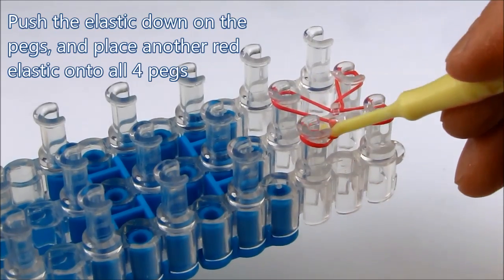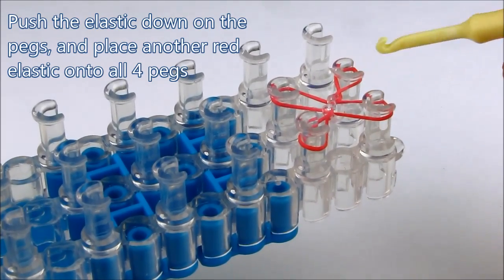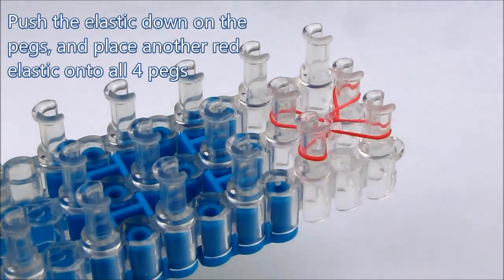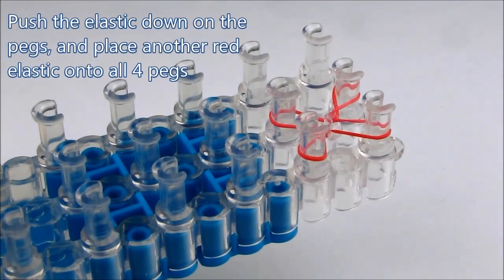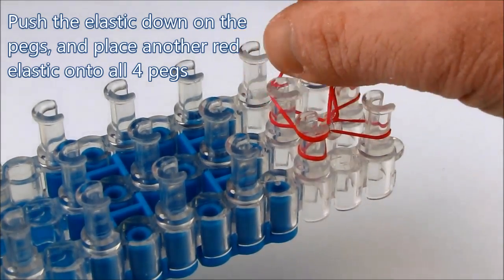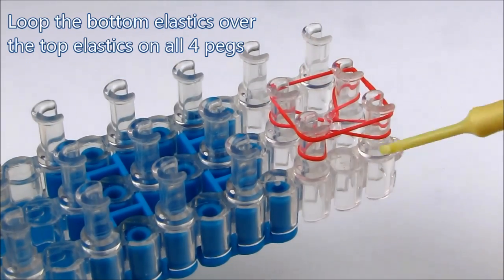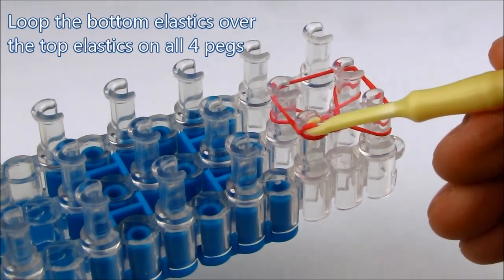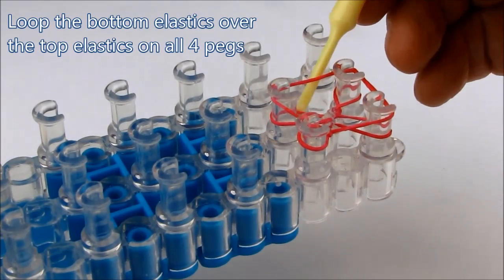Once we have the clip attached, push the elastic down onto the pegs as far down as it goes and place another red elastic onto all four pegs. Now loop the bottom elastics over the top elastics on all four pegs.